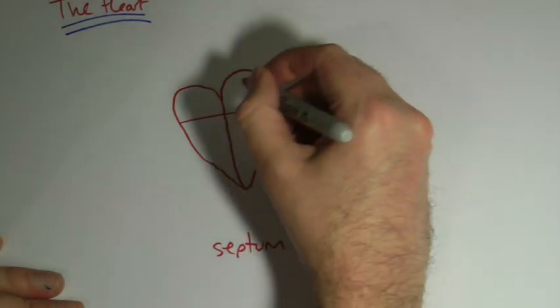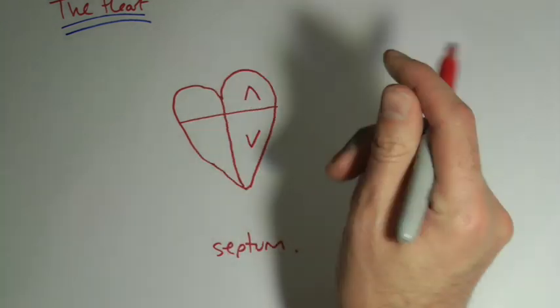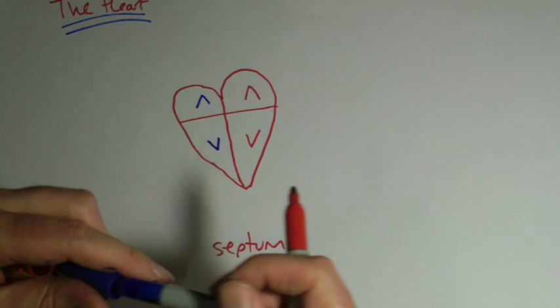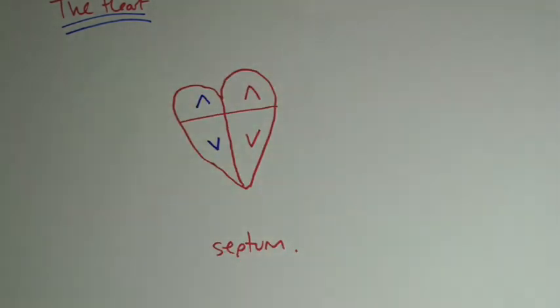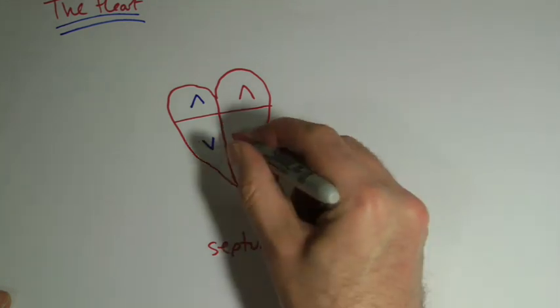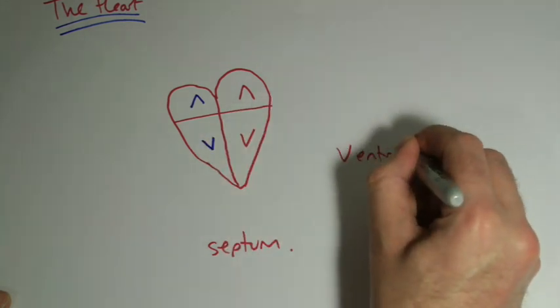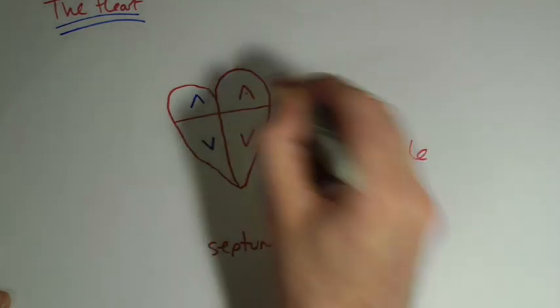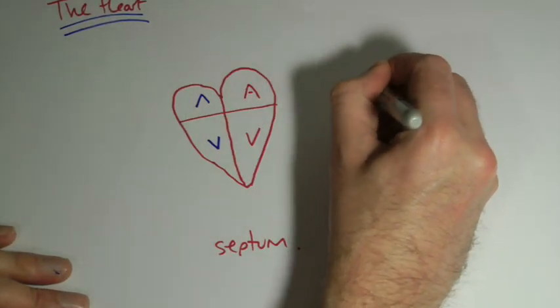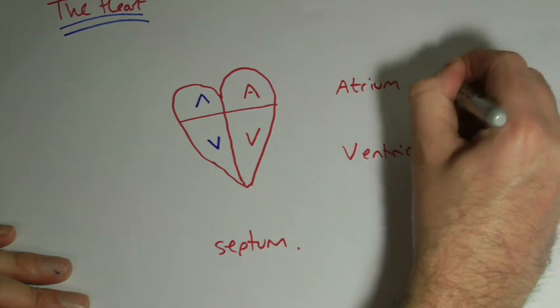So we have these four chambers, as they're called, and I'm going to use colour on here. Again blood isn't really blue, but it helps to remind ourselves. So notice how I've done these little arrows pointing up. V for ventricle, pointing down, and A for atrium, plural is atria.